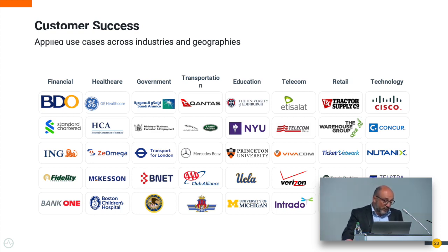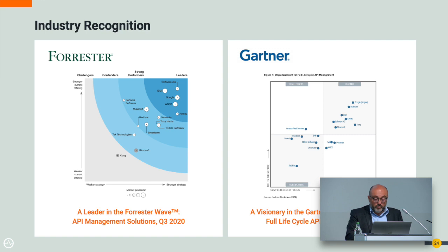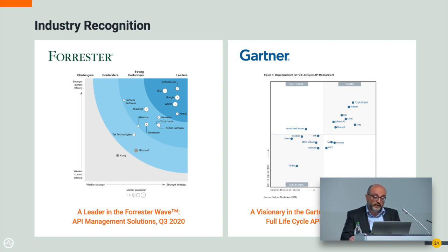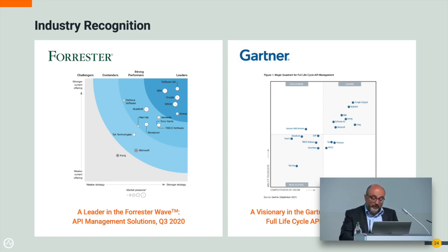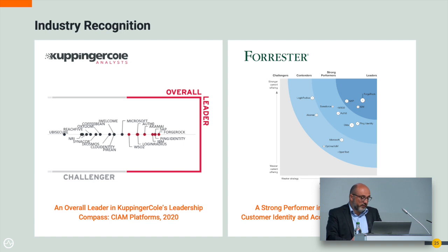Another factor to consider is analyst recognition. We are reported by both Forrester and Gartner. Forrester places us as a leader with a significant market share, alongside large companies like IBM and Google — this is for the API Manager part. The same is true for identity and access management, where we appear in the Forrester analyst report and in the Kuppinger Cole report, which is specifically dedicated to the identity and access management area.